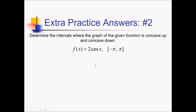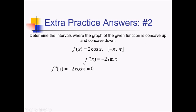On this problem, I'm trying to figure out concavity for 2 cosine of x, just on the interval from negative pi to positive pi. For that, I need to know the second derivative. The first derivative is going to be negative 2 sine of x. And then the second derivative is going to be negative 2 cosine of x. We want to figure out critical values by setting this equal to 0, which equals 0 wherever cosine of x itself equals 0. Cosine is going to be 0 on the interval from negative pi to pi at negative pi over 2, and also at positive pi over 2.